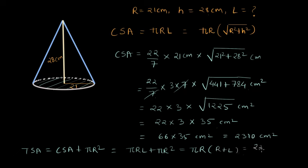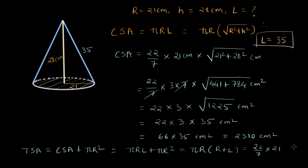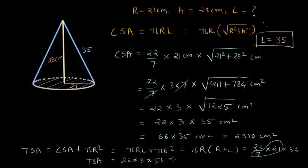We know πr = (22/7) × 21. From our earlier calculation, l = √(r² + h²) = √1225 = 35. So r + l = 21 + 35 = 56. Simplifying 21/7 = 3, we get TSA = 22 × 3 × 56.